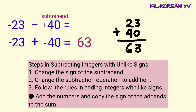Ngayon, kukupyahin natin yung sign ng addends. Yung sign nila ay negative. Kaya, lalagyan natin ng negative sign ang sum. The answer for negative 23 minus positive 40 is negative 63.